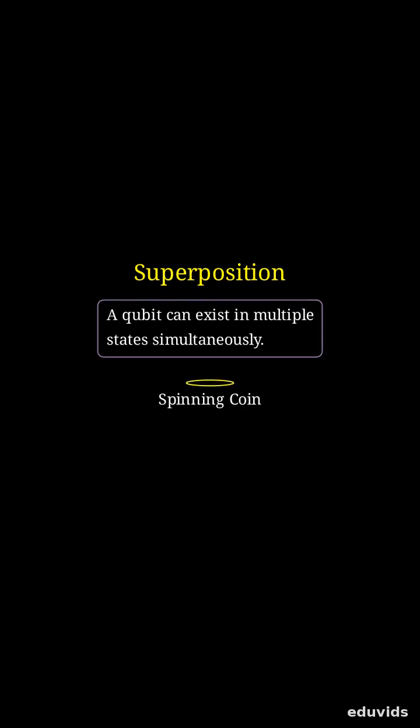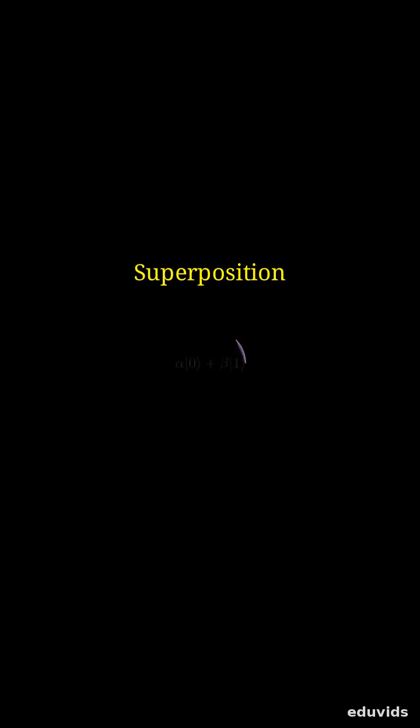This incredible ability is called superposition. Superposition lets a qubit be in multiple states all at once. It's like a coin spinning in the air before it lands as heads or tails. It's actually both. A qubit can exist as zero and one, each with a probability.